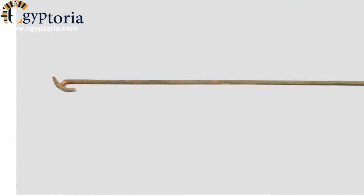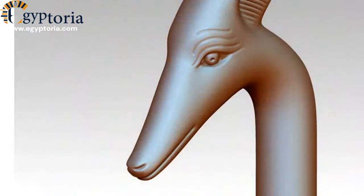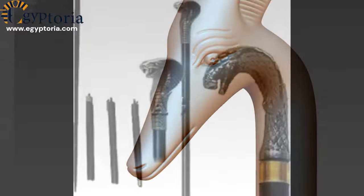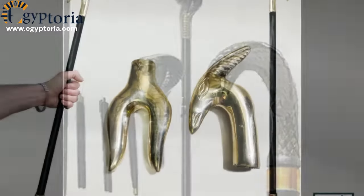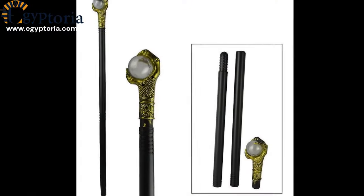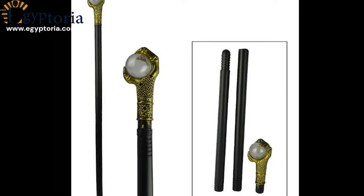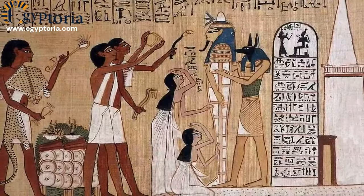Pharaohs sometimes held a scepter, which was a staff-like object associated with their authority. The scepter could be plain or intricately decorated, and its specific design could vary depending on the time period and the pharaoh's personal preferences.